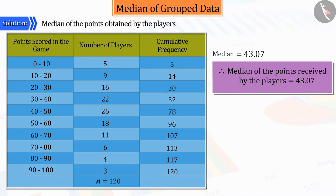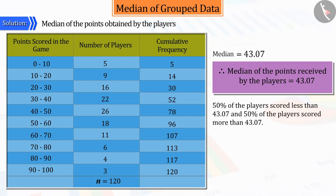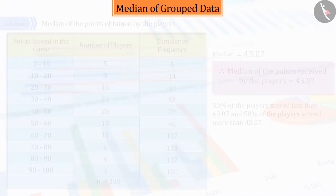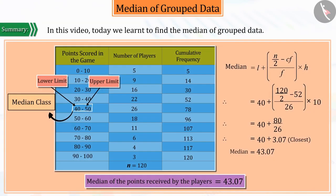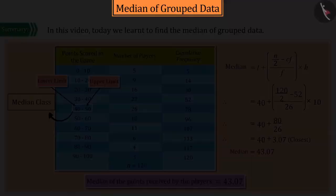So, we can say that the median of the points obtained by the players is 43.07. This means that approximately 50% of the players have got points less than or equal to 43.07 and the remaining 50% of the players have got points more than or equal to 43.07. In this video, we learnt to find the median of grouped data. In the next video, we will see interesting examples based on this.